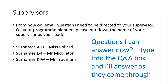I'll answer any questions you have now — if you type them into the Q&A box, I'll try and answer them as they come through. Also, I've got a lot of students doing Duke of Edinburgh at the moment and I'm getting a lot of emails. So: if your surname is between A and D, send your questions to me; if your surname falls between A and J, contact Mr Middleton; and if your surname falls between K and W, contact Mr Tromans — that's T-R-O-M-A-N-S without the U. That might speed things up because I'm struggling to deal with everything.